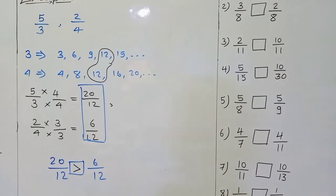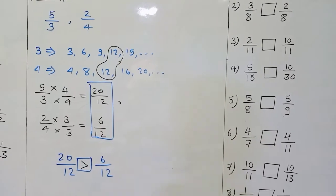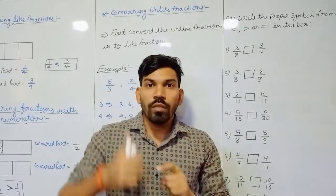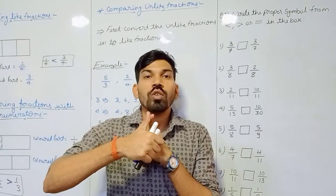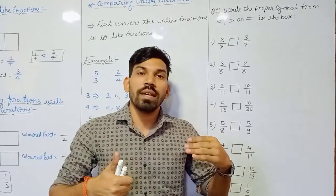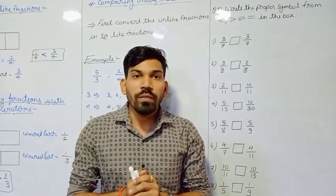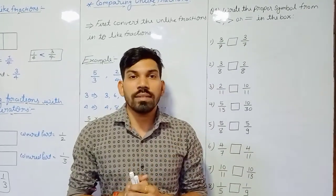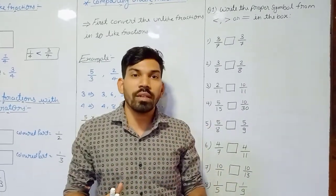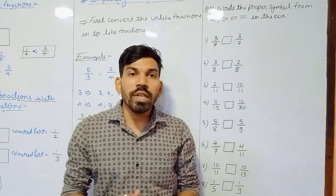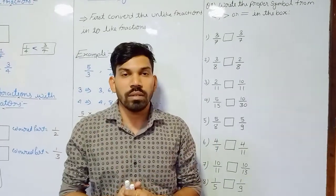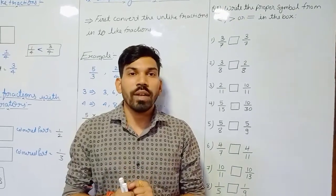So this is how we do the comparison of fractions. Whenever we have such kinds of problems — first, go to the first comparison type: if they are like fractions, decide according to the numerator. If the numerators are equal, go by the denominator — whichever denominator is smaller is actually the greater fraction.